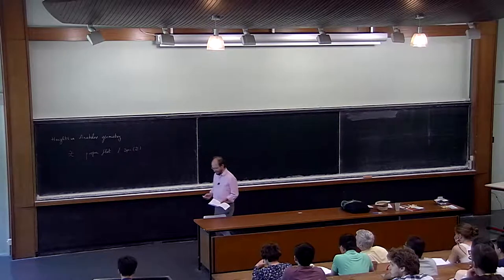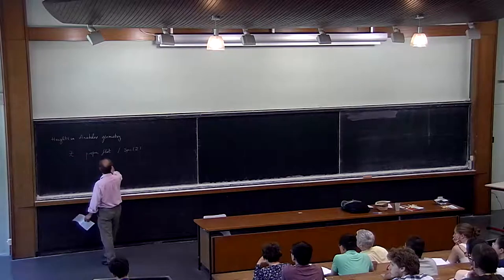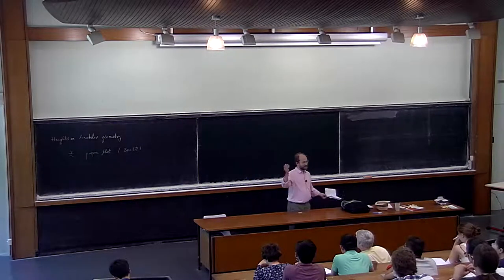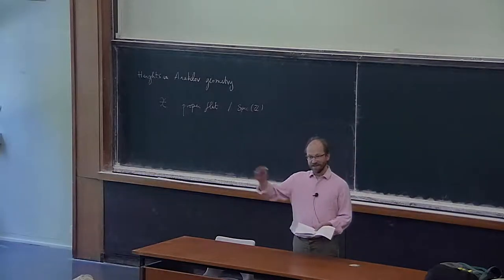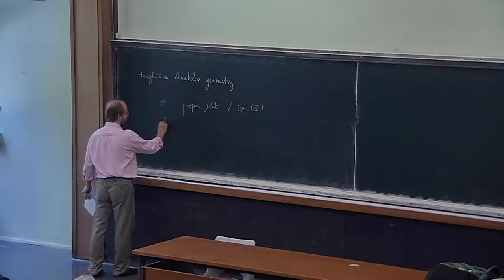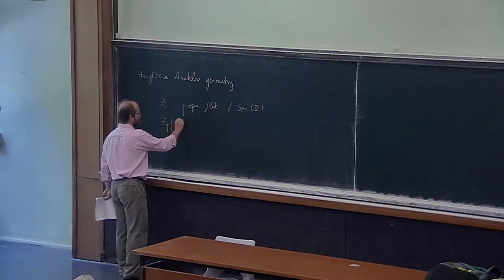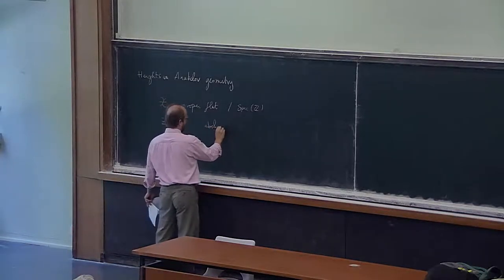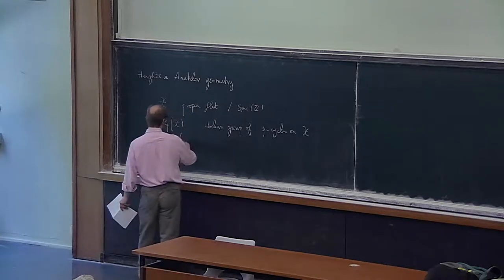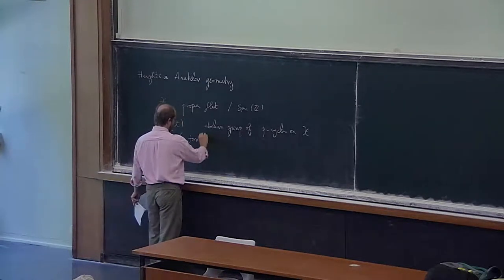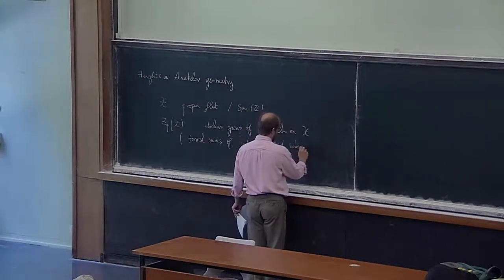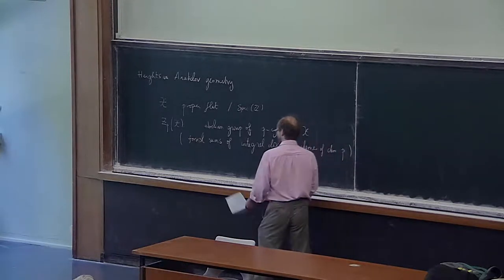Very likely the scheme you reach that way will not be flat — it will be projective but not flat, because for example you could take the equation 2x = 0, and then in the fiber above 2 you get something too big to be flat. But it's very easy to remove this non-flat locus: you take the closure of the generic fiber and you get something which is flat. So I will take this notation: if p is an integer, I will denote by Z_p(X) the abelian group of p-cycles on X, which are formal sums of integral closed subschemes of dimension p.